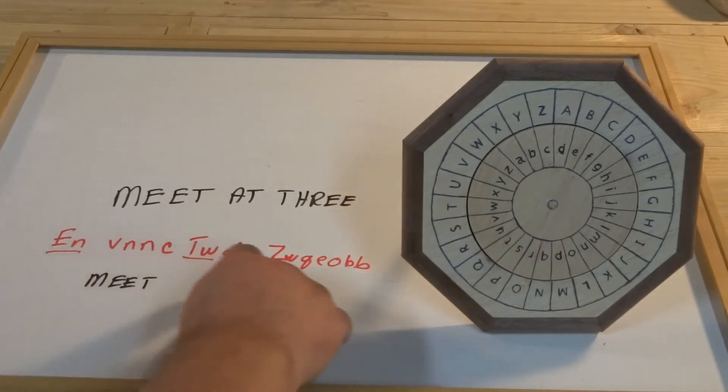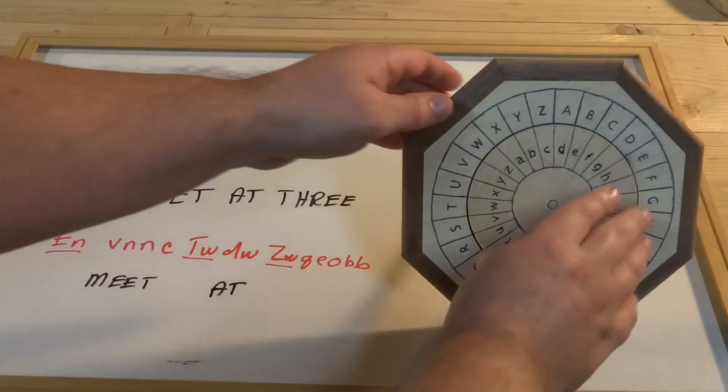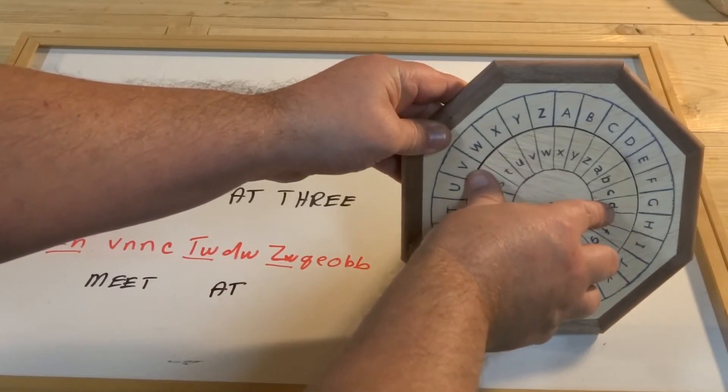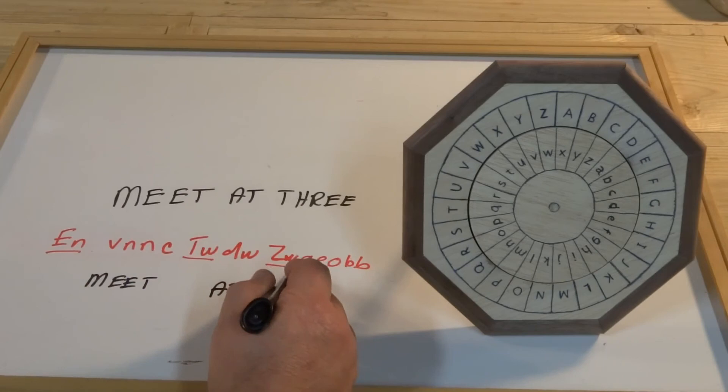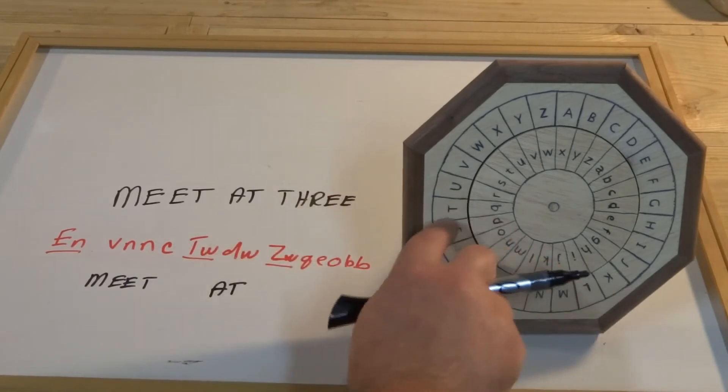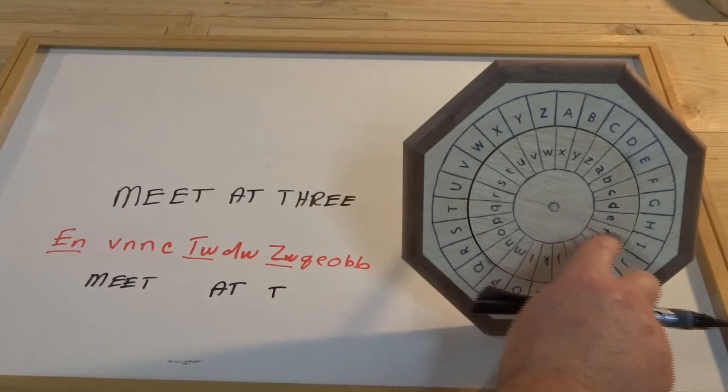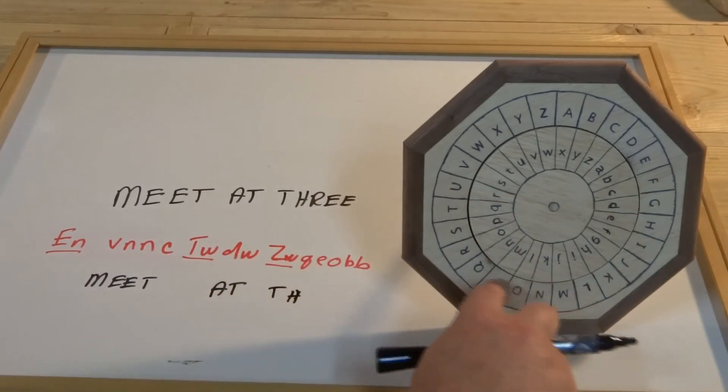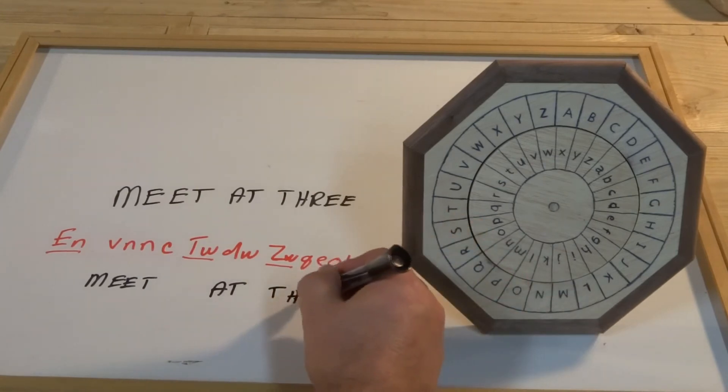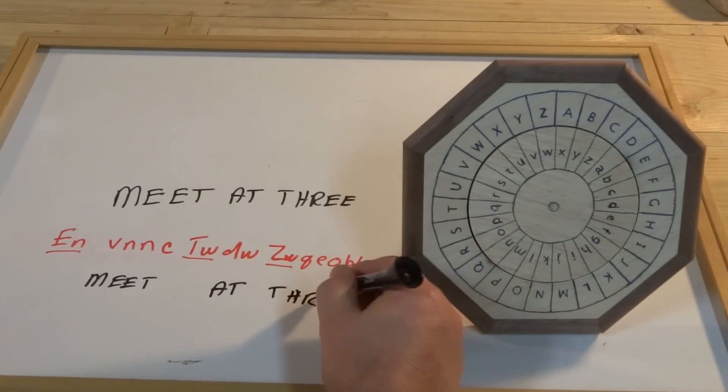And then finally, we get a capital letter again. So we know the next letter, lowercase W. That's our index. So we change that again. And then finally, we decode the last portion. So we see Q, that's T. We see E, that's H. We see O, that's R. And then finally, we get the B's, which is our E's.